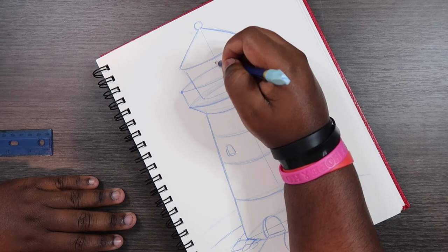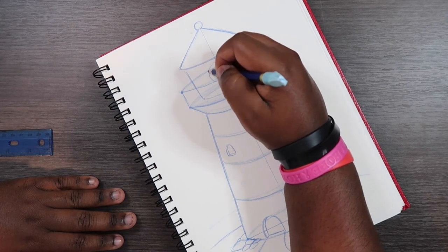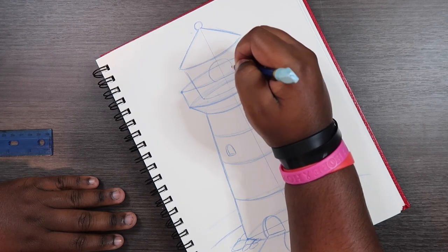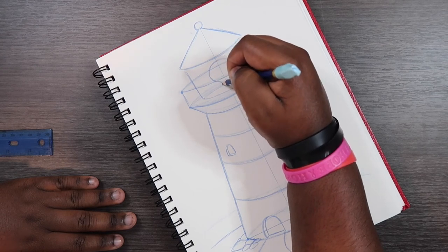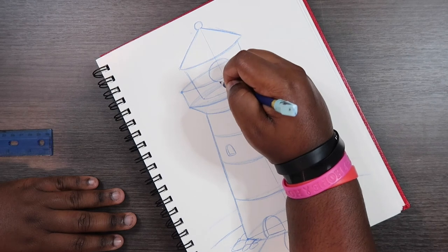Alright, and now what I can do now is I can draw the light bulb. I'm going to just add a big circle in here. I'm going to draw on a little light bulb.